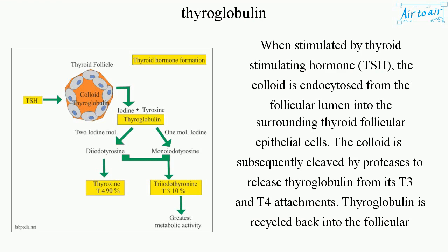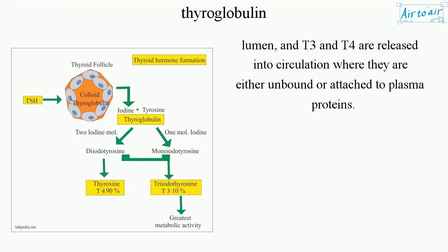Thyroglobulin is recycled back into the follicular lumen, and T3 and T4 are released into circulation where they are either unbound or are attached to plasma proteins.